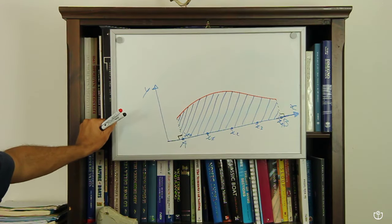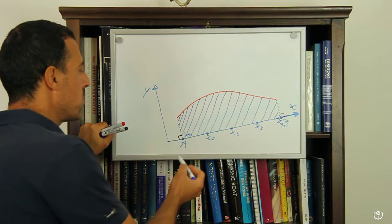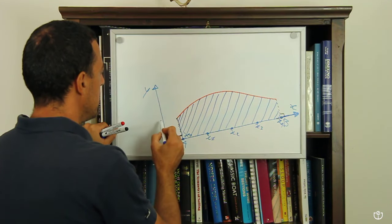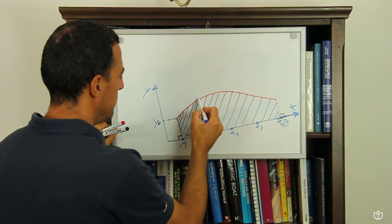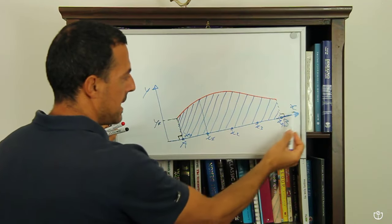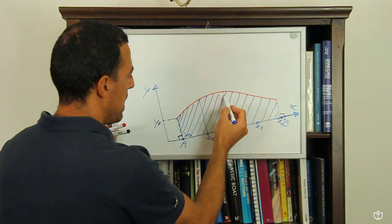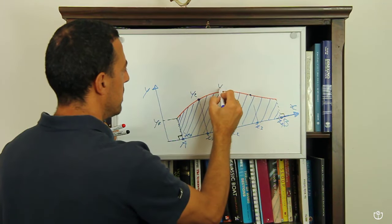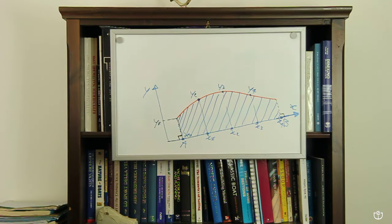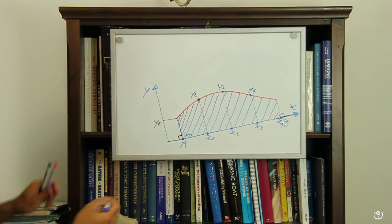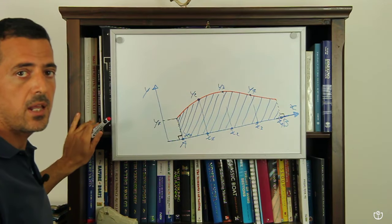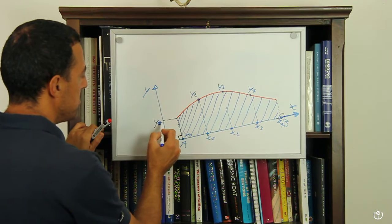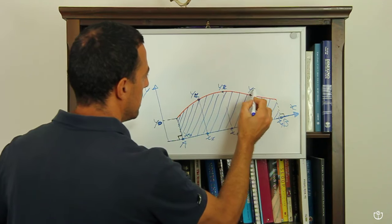Il segmento AB è diviso in 4 parti uguali. In corrispondenza degli x₀, x₁, x₂ eccetera, andiamo a valutare la lunghezza di questi segmenti tracciando le perpendicolari all'asse X, ovvero le parallele all'asse Y. Andiamo a valutare la lunghezza di questi segmenti e li chiamiamo Y₀, Y₁, Y₂, Y₃ e Y₄. Queste lunghezze le possiamo valutare con il righello sul nostro piano di costruzione.